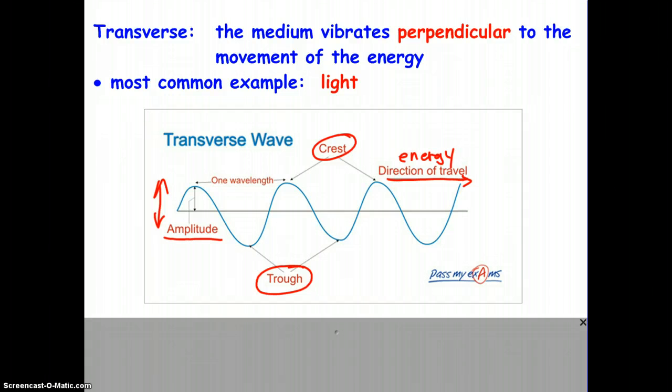And then we have wavelengths. On this diagram, the distance between these two red dots is labeled as a wavelength. Is that all that we could consider to be a wavelength in this diagram? What about the distance between these two blue dots? Would that be a wavelength? The answer is yes.